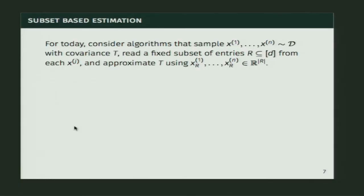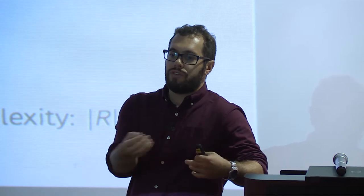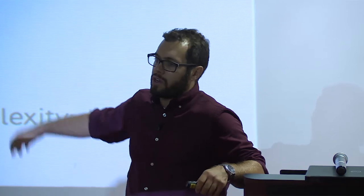We're going to consider algorithms that take n samples from our distribution, and for every sample read some fixed subset of entries which I'll denote R. We approximate our covariance matrix using just these samples in this subset R. I have n vectors, I read every one at |R| locations — my entry sample complexity is the size of this set, and my total sample complexity is |R| times n. Note this isn't the only type of algorithm you could consider, but all of our algorithms follow this format.